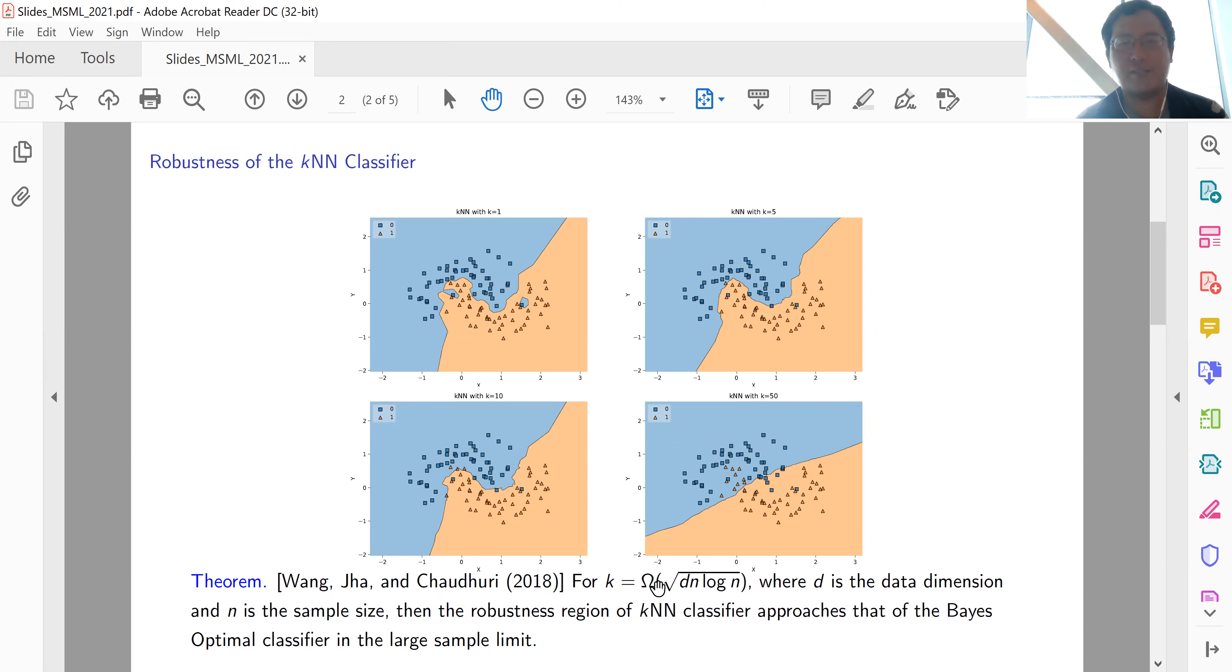Well, this is an interesting result. However, it's impractical. If we consider d equals one thousand and n in the big data regime around one million, this k would be really, really big. So it's not useful in practice.